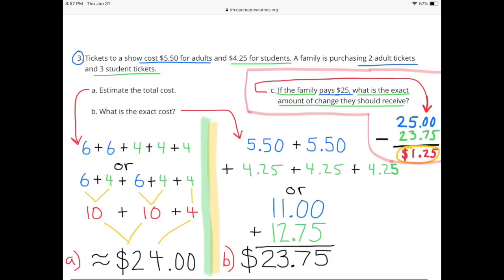$5.50 can be estimated as $6.00 and $4.25 can be estimated as $4.00. So six plus six plus four plus four plus four, or six plus four plus six plus four plus four. That's the same as 10 plus 10 plus four, or $24. The estimated total cost would be just about $24.